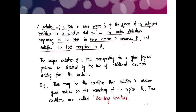The unique solution of a PDE for a given physical problem is obtained by using conditions given for that problem. These conditions are of two types. The first type is boundary conditions — conditions that the solution u assumes given values on the boundary of the region R. For example, in a one-dimensional wave equation with a string of length l, the boundary conditions are specified at the endpoints x = 0 and x = l.